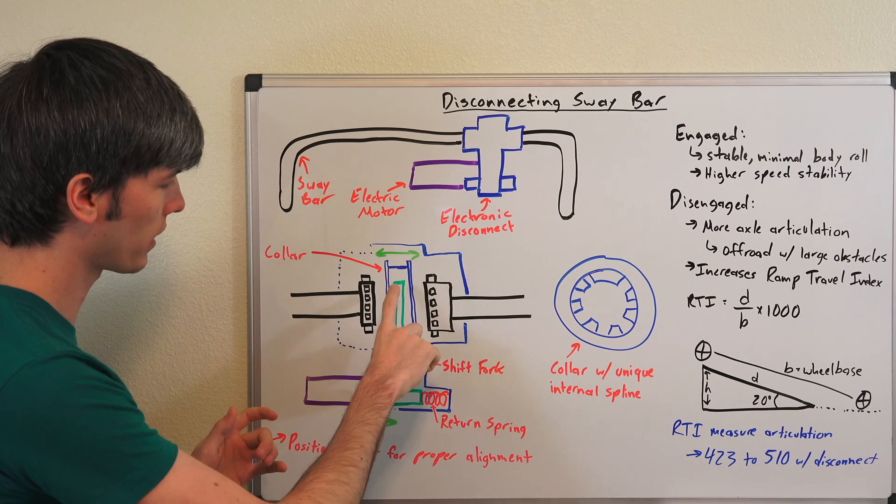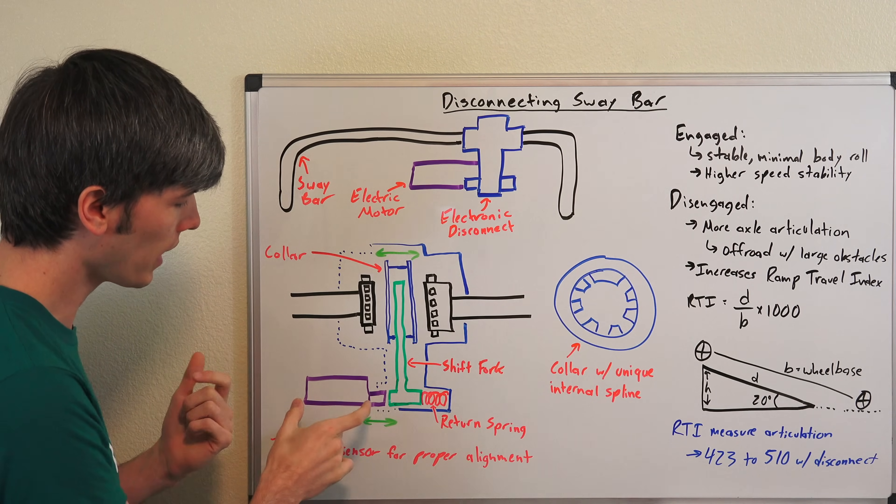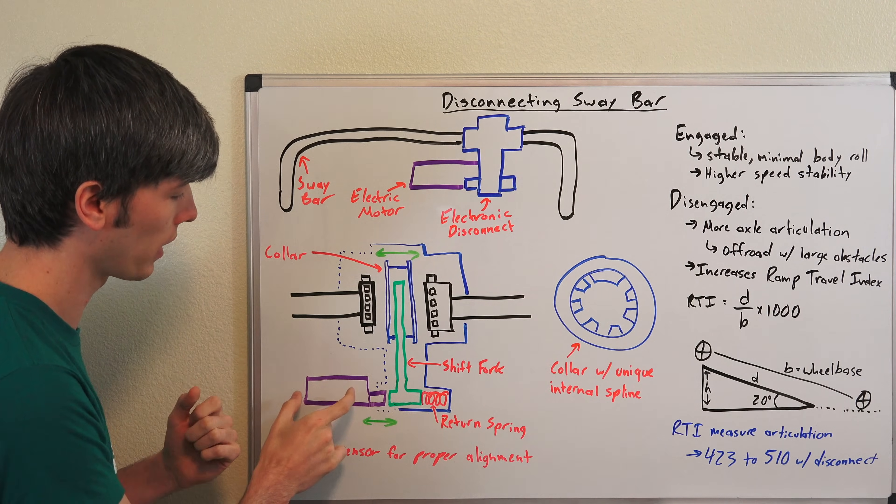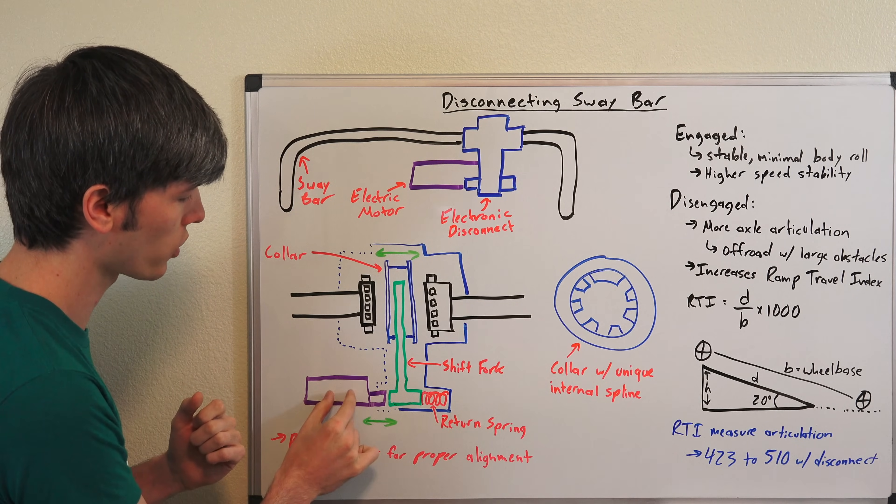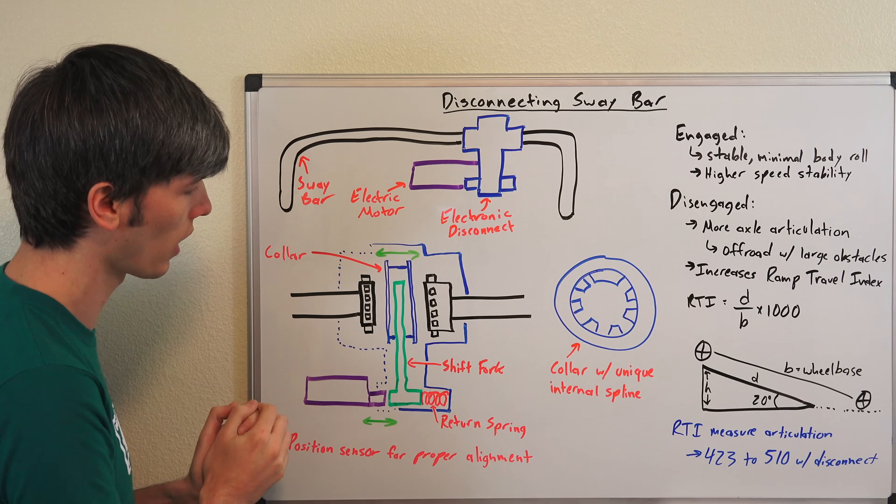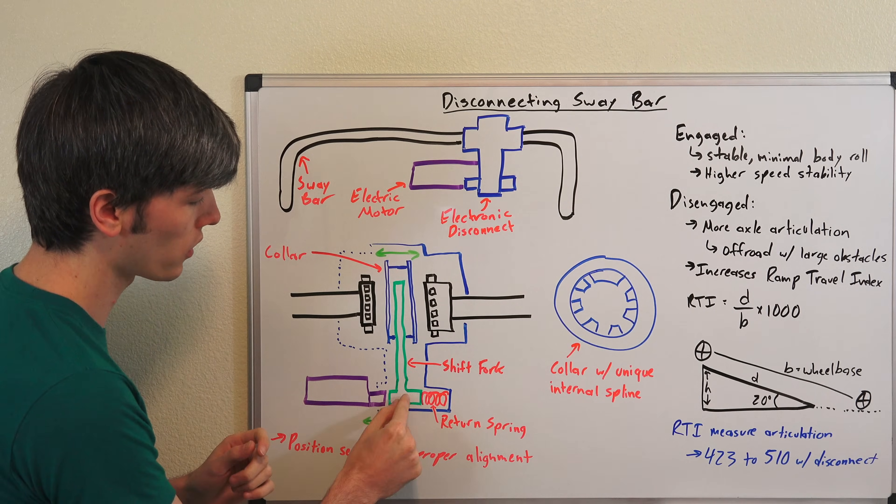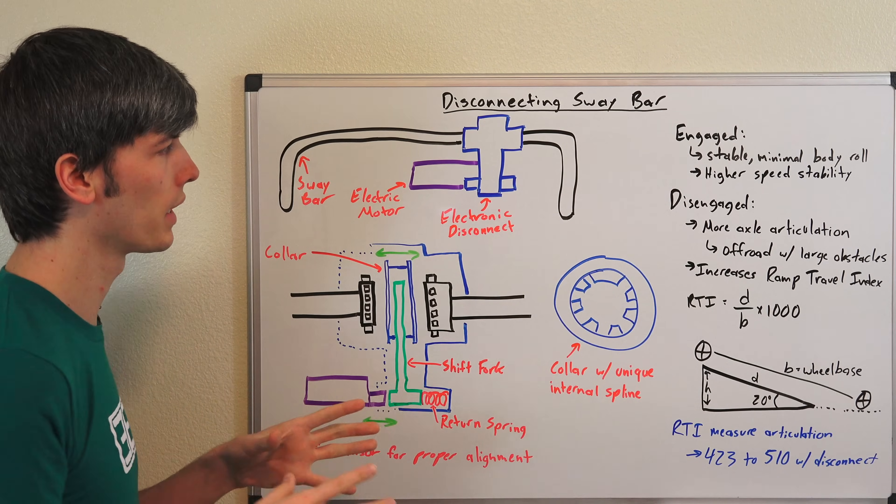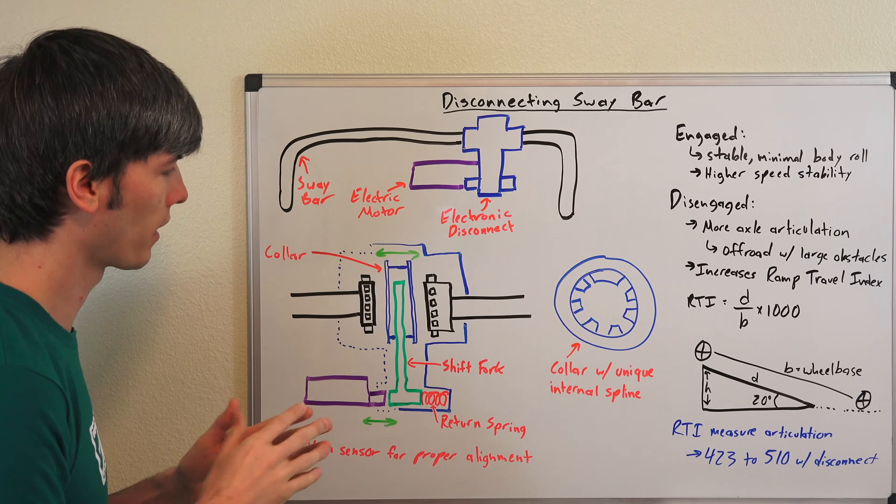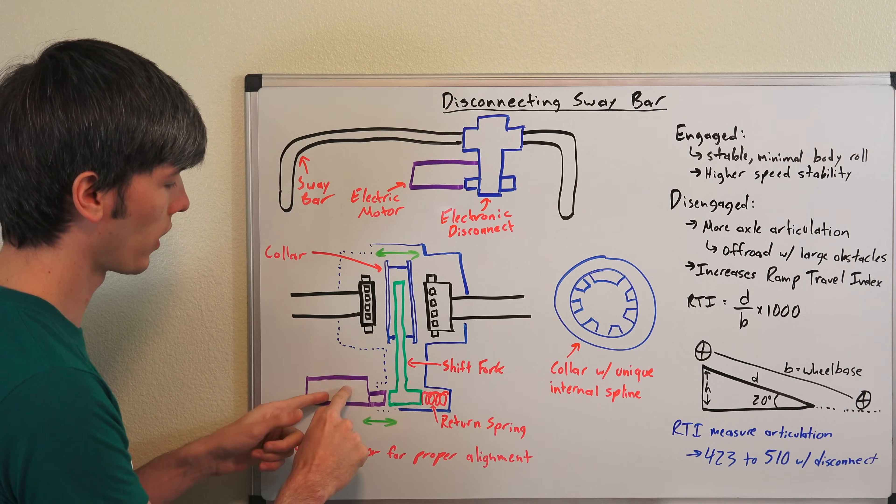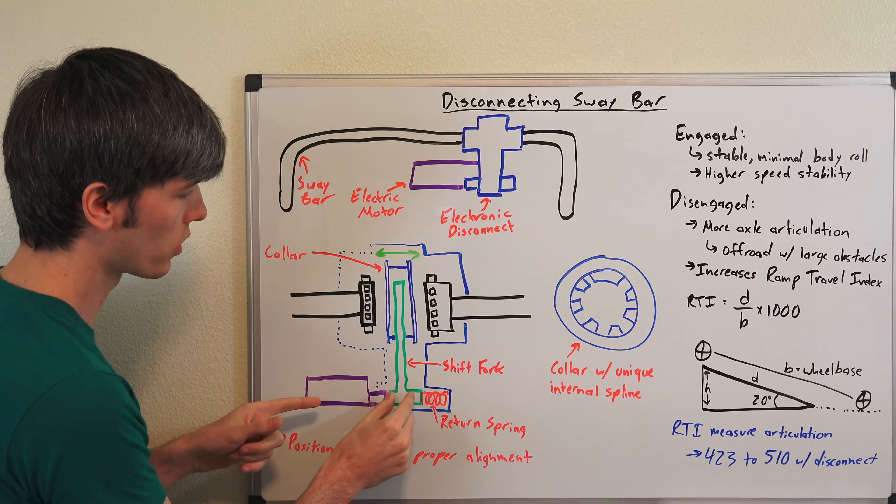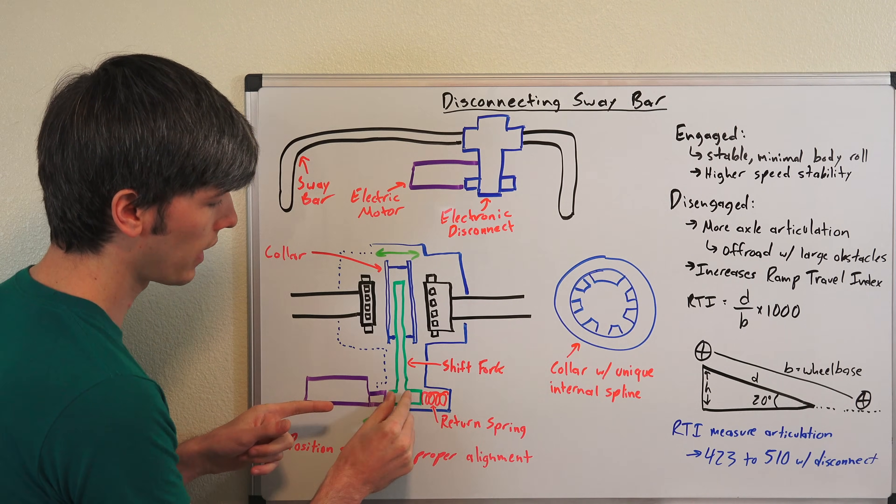You've got this shift fork here and your electronic motor right here. And so that motor is going to be your actuator which pushes this shift fork back and forth. You've got a return spring here, so normally the sway bar is going to be fully connected. And then when you push the button to disconnect, what's going to happen is this electric motor here is going to push this shift fork against this return spring.